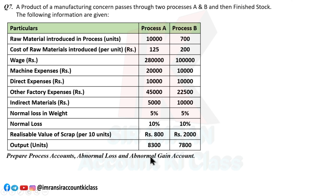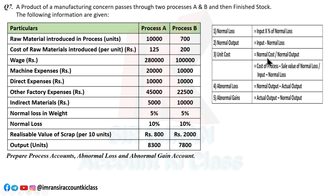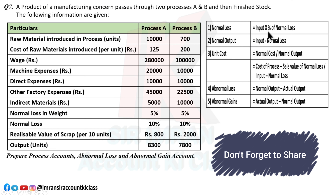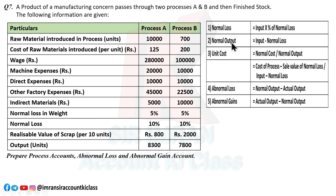By comparing actual output with expected output, you need to find abnormal loss or abnormal gain. You need to prepare two process accounts, plus an abnormal loss and abnormal gain account. The table to remember: normal loss or weight loss is given as a percentage of input. Normal output = input minus normal loss. If normal output is greater, it's abnormal loss; if actual output is greater, it's abnormal gain.